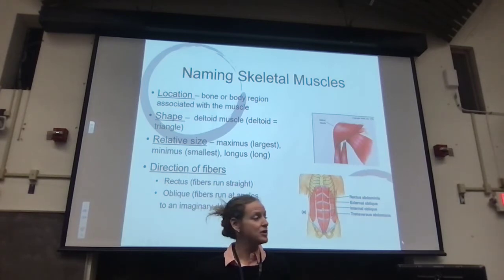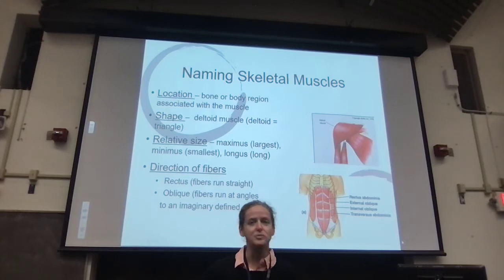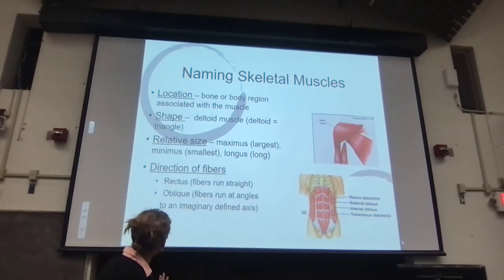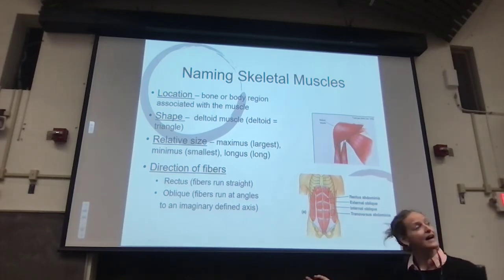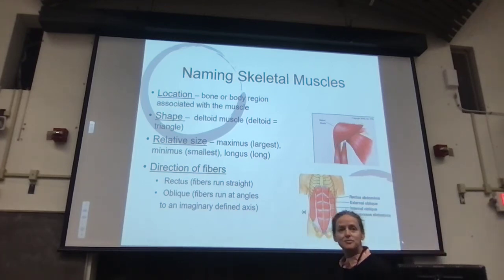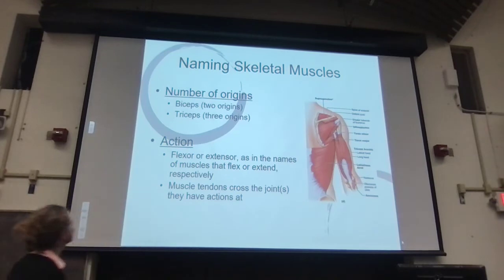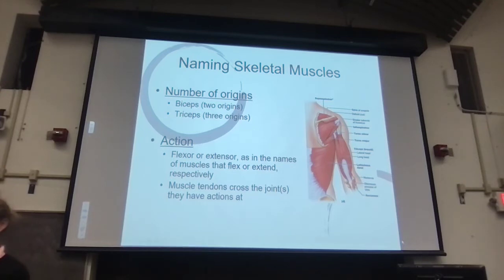A lot of times the name of the muscle can help you. Rectus abdominis — it's probably in your abdomen. Tibialis anterior — it's probably by your tibia. Sometimes the shape gives the name: trapezius, deltoid. Sometimes named by size or direction of fibers, or number of origins — the biceps has two origins, triceps has three. Sometimes named for the action: flexor carpi radialis is a flexor, adductor longus is an adductor. You don't need to memorize these specifically, but the name often helps.